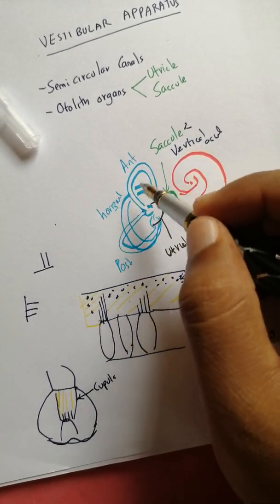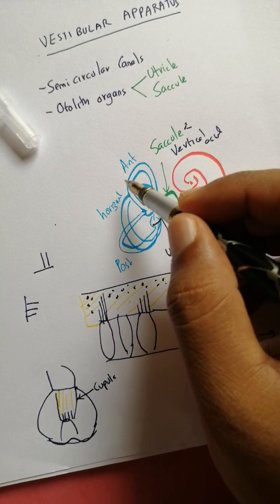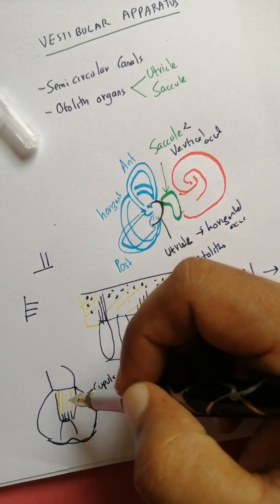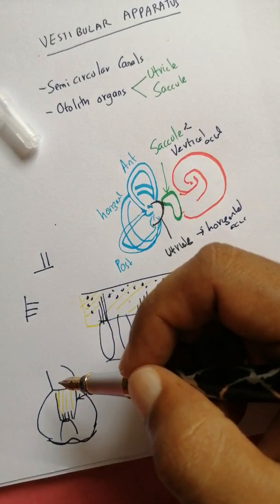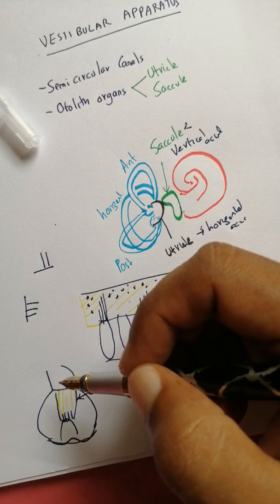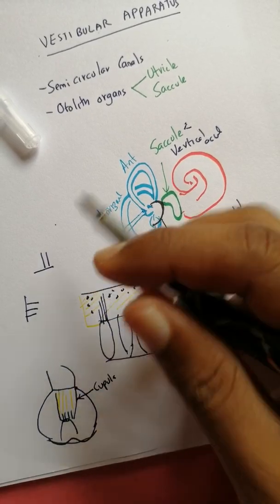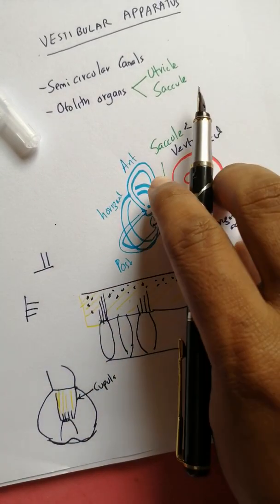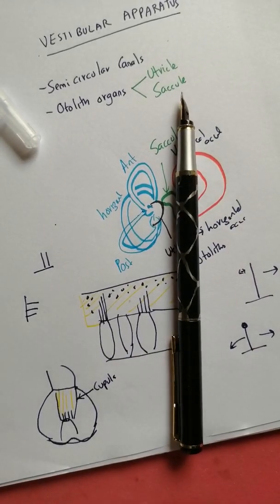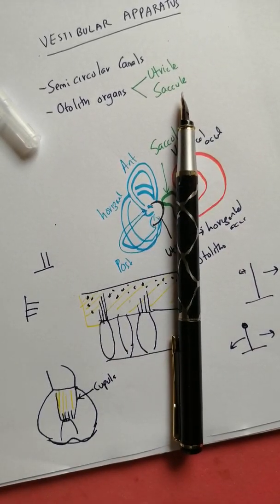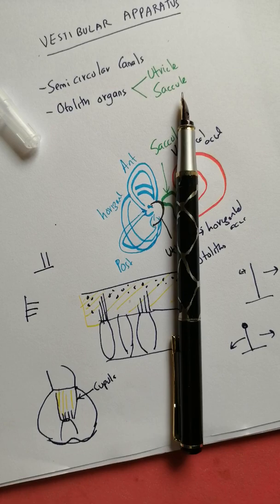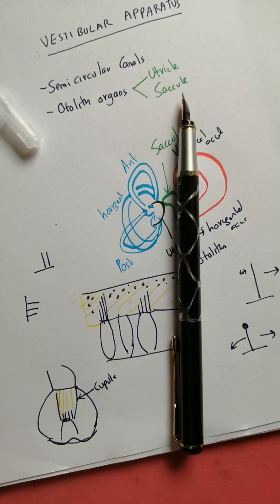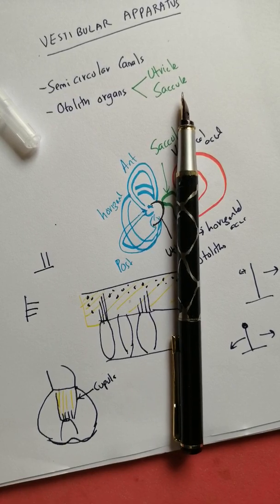So here what happens is that when our head rotates in a circular direction, the hair cells also get bent, and so we are able to sense those accelerations in different rotations in the different planes.